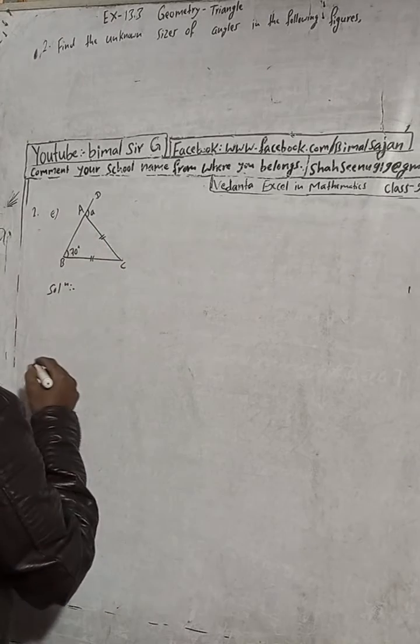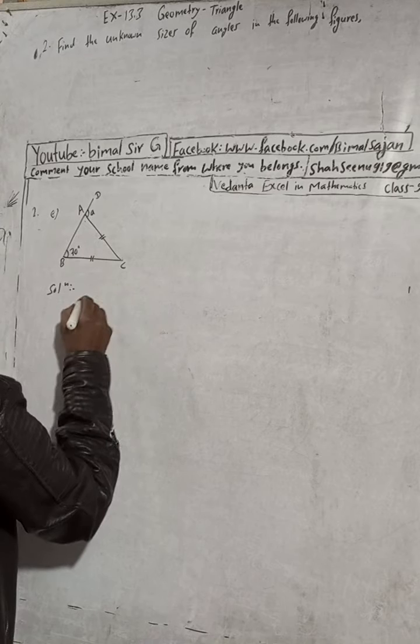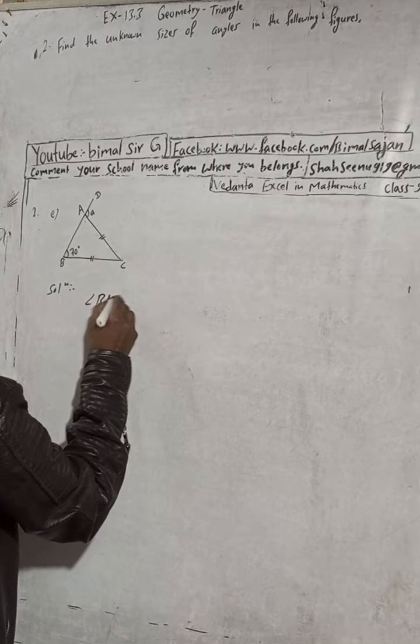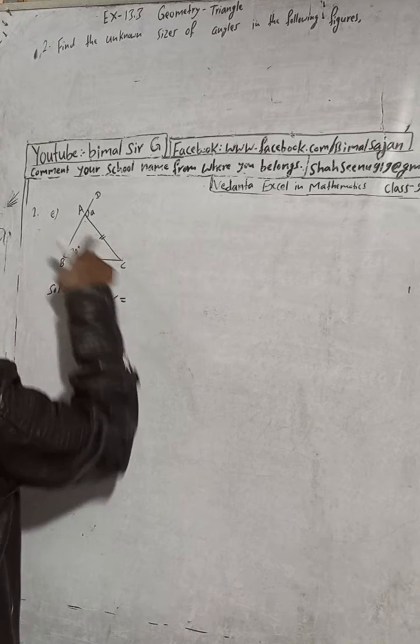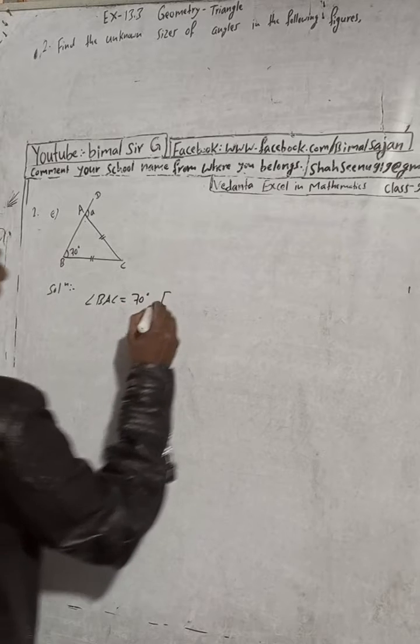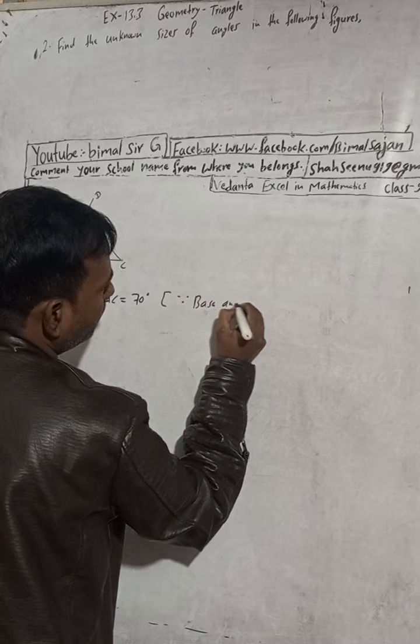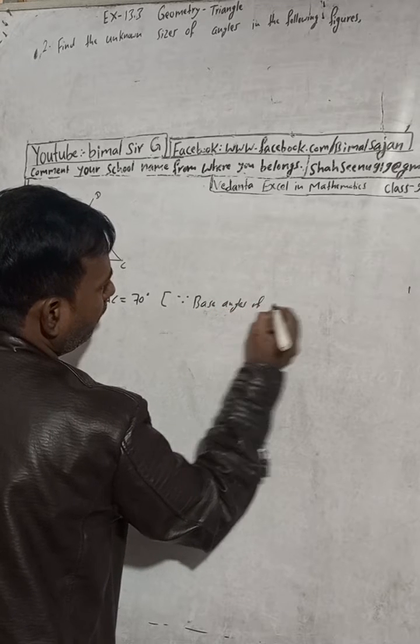So for this, how we can write it? 70 degrees. I will name this as angle BAC. Angle BAC, this angle equals 70 degrees. The reason is base angles of an isosceles triangle.